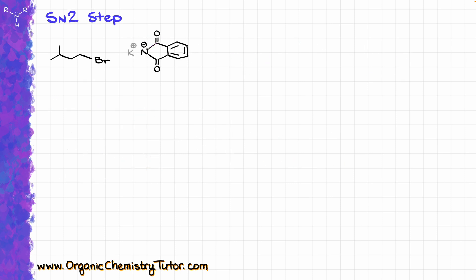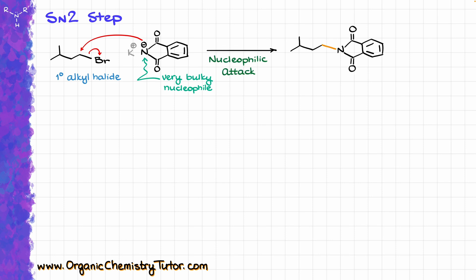The core of this synthesis is going to be an SN2 reaction between our primary alkyl halide and our potassium phthalamide, which is a very bulky nucleophile. Because of how bulky it is, the reaction is pretty much limited to primary alkyl halides — if you try to do it with a secondary alkyl halide, most likely you are going to fail. The nitrogen comes in and displaces the leaving group, which is the bromine in this case, and I have highlighted the new bond created between carbon and nitrogen.